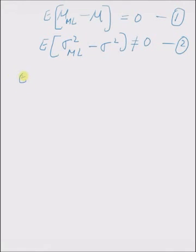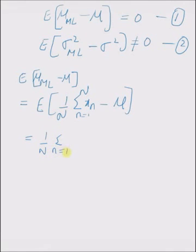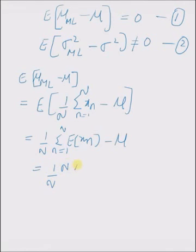Now consider the first property. By definition, the ML estimate of the mean is the standard arithmetic mean. So we evaluate the expected value of the average of n values minus μ, which equals 1/n times the summation from n=1 to N of the expected value of x_n, minus the expectation of μ, which is still μ. Therefore, this is 1/n times n·μ minus μ, which equals 0.